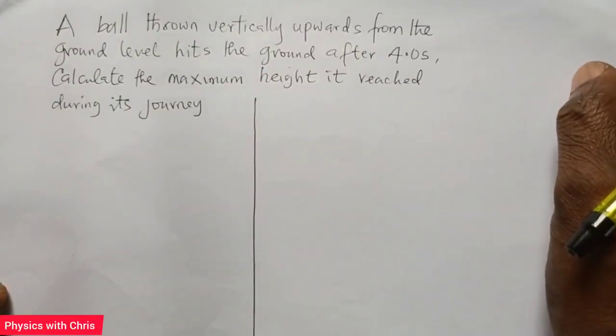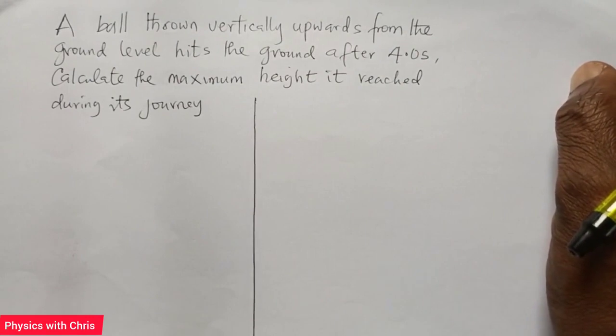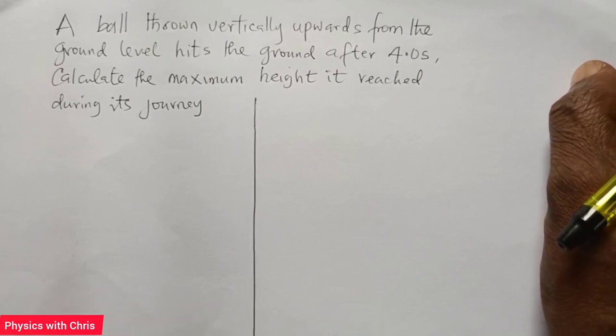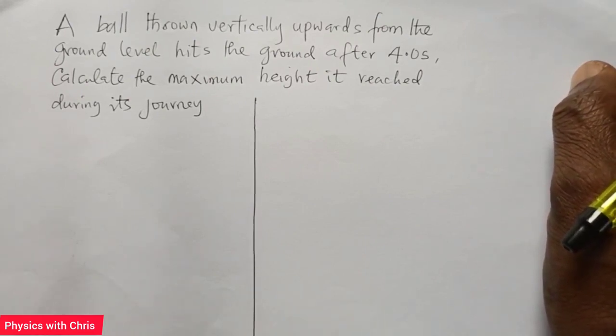A ball thrown vertically upwards from the ground level hits the ground after four seconds. Calculate the maximum height it reached during its journey.